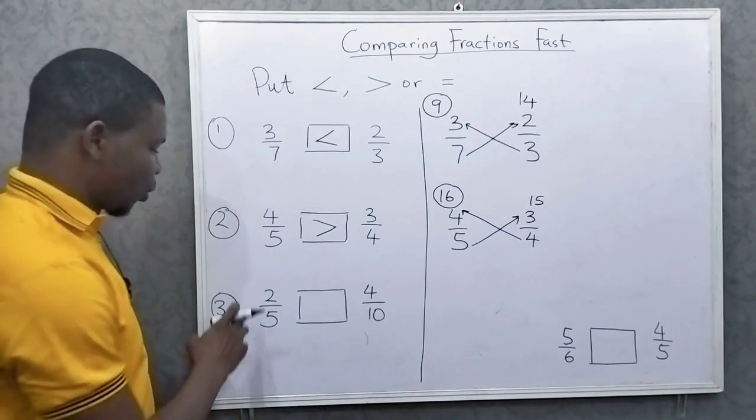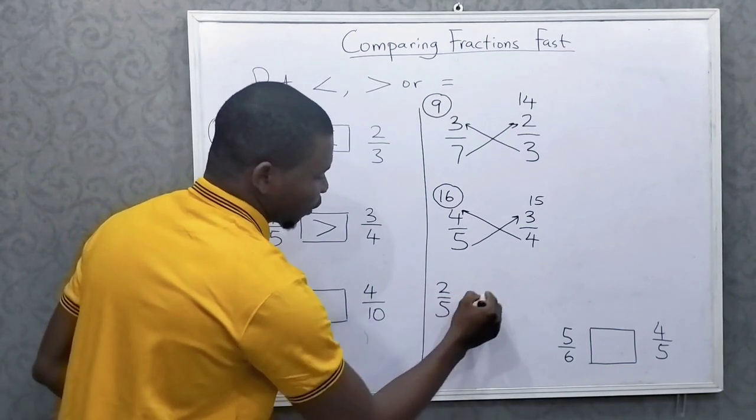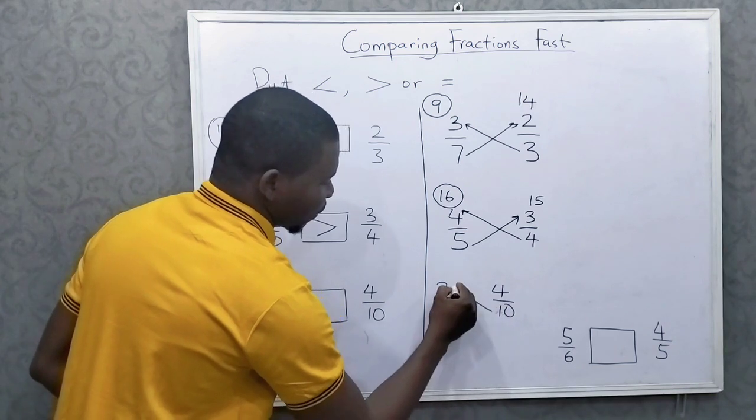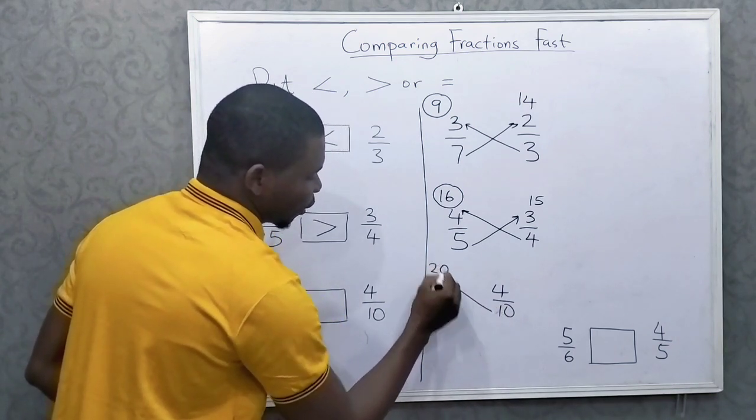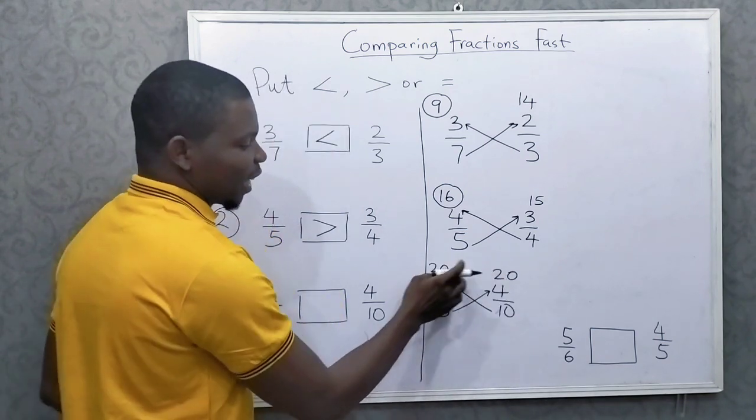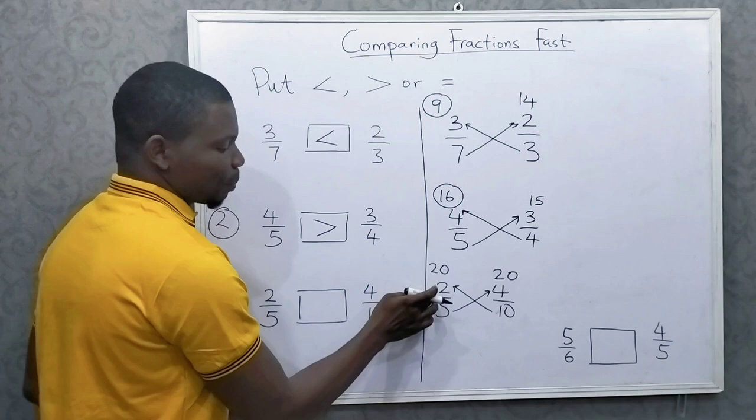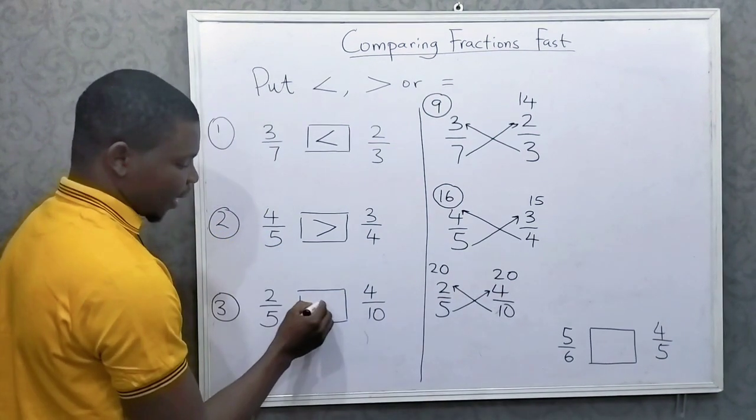Let's do the last one. 2 over 5 and 4 over 10. We multiply diagonally. 2 times 10 is 20, 5 times 4 is also 20. So they are equal. So it means that 2 over 5 is equal to 4 over 10.